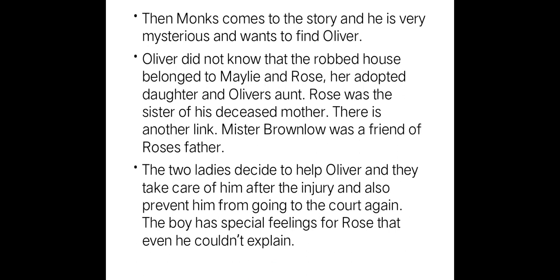In that house there were two characters named Mrs. Maylie and Rose. Rose was Mrs. Maylie's adopted daughter. Rose was Oliver's aunt — that is, the sister of Oliver's mother. Also, Mr. Brownlow was the father of Rose, so we could find a connection between all the characters. Mrs. Maylie and Rose decided to help Oliver, took care of him, and prevented him from going to court again. Oliver had created some kind of special feelings for Rose, though he couldn't explain what kind of feeling it was.